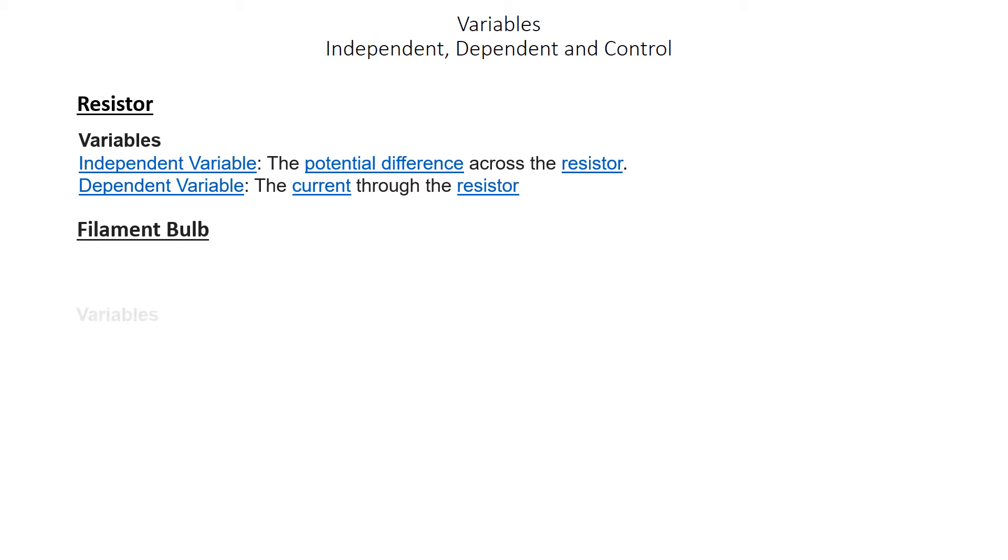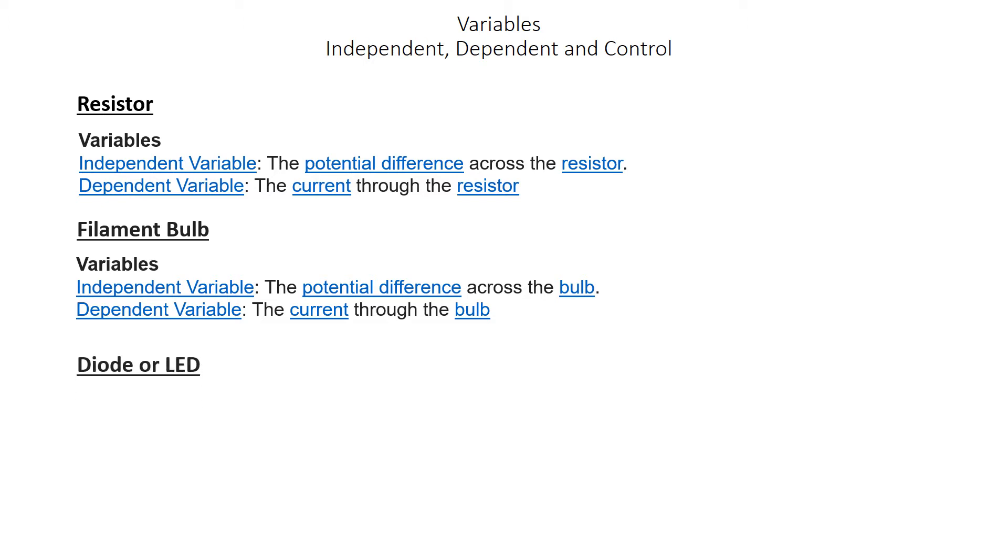When we're testing the filament bulb, the variables are going to be: the independent variable is the potential difference across the bulb, and the dependent variable is the current through the bulb. You can see the pattern here.